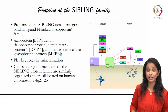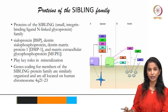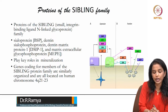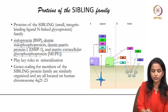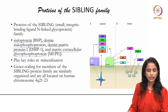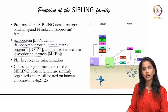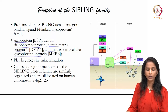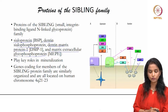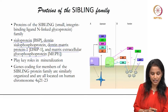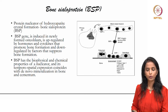We move on to the proteins of the SIBLING family. These are the promoter part of the mineralization promoting agents. The examples of the promoting agents are sialoprotein, dentine sialophosphoprotein, dentine matrix protein, and matrix extracellular glycophosphoprotein. These are grouped as the SIBLING family, which is the acronym for Small Integrin Binding Ligand N-linked Glycoprotein, and they play a key role in the mineralization process.